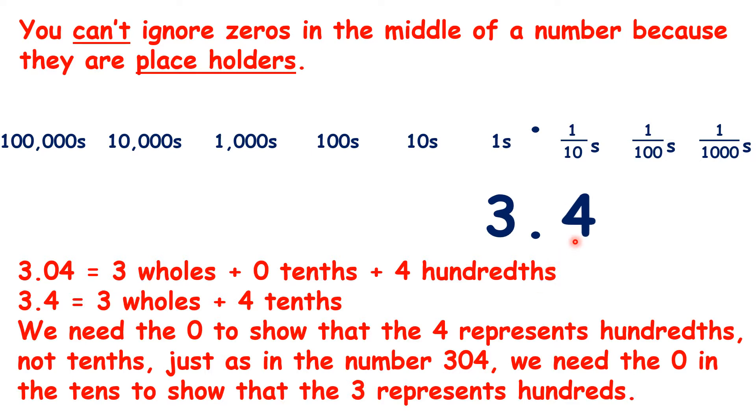So to make sure the digits are in the right place value columns, we might need a zero in the middle of a number. It's only zeros at the end of a decimal number that we can ignore.